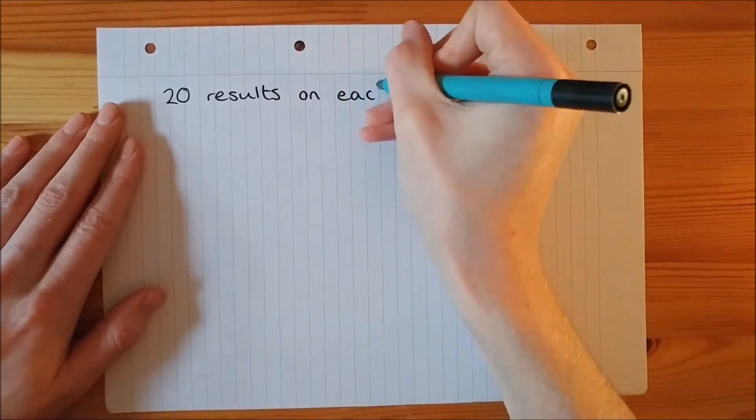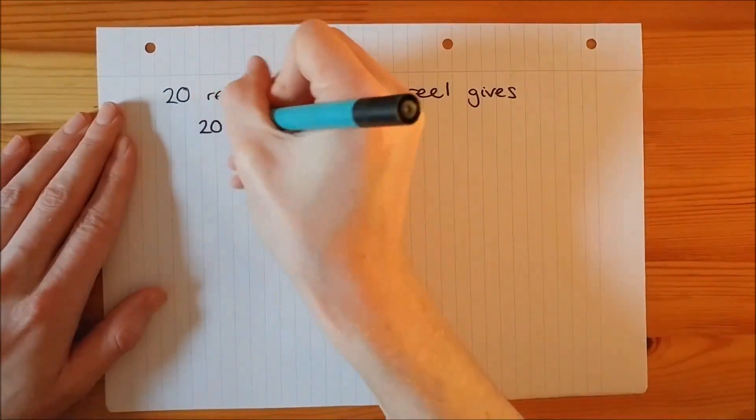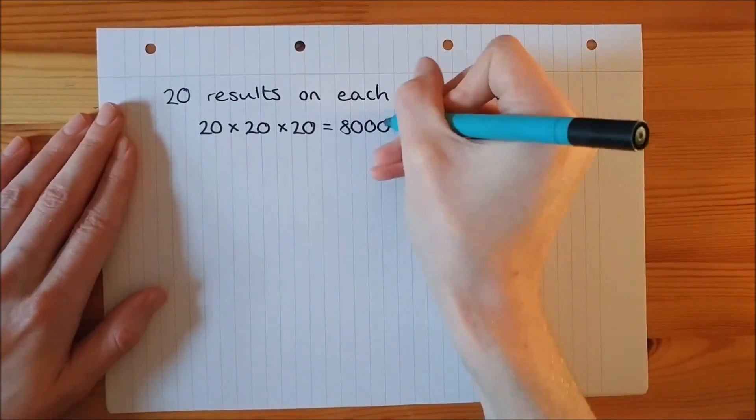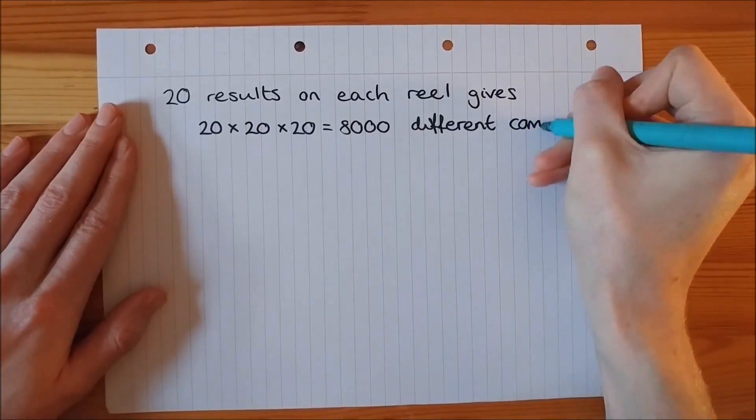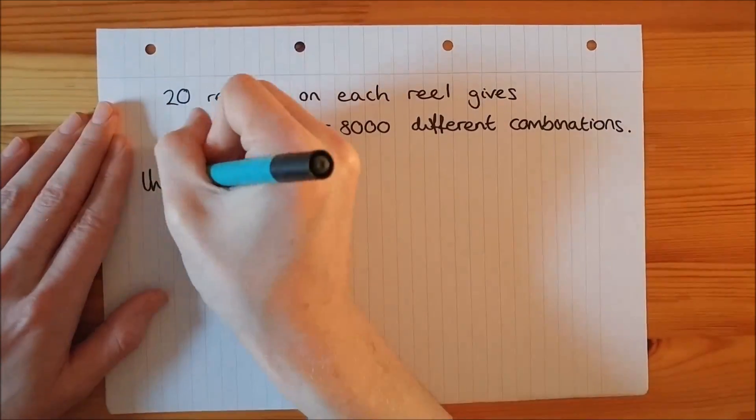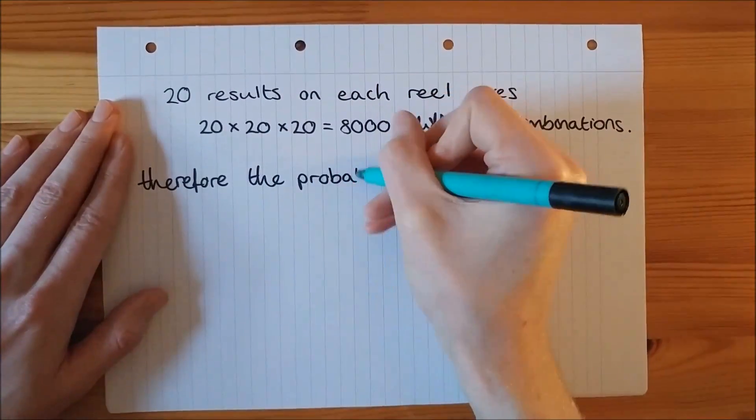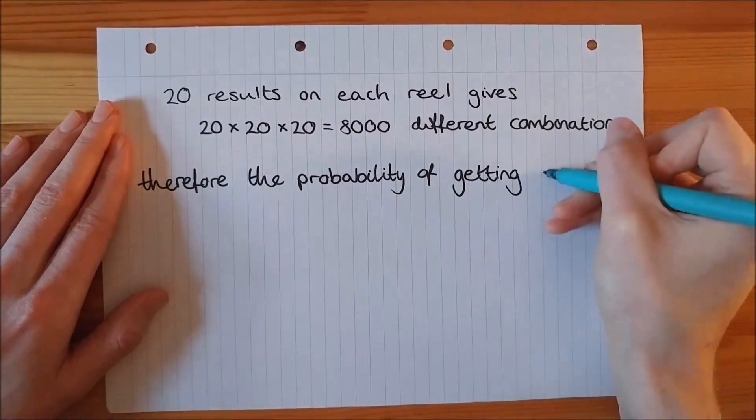20 results on each reel gives 20 times 20 times 20, which is equal to 8,000 different combinations. Therefore, the probability of getting a line is equal to 1,073 over 8,000, which is approximately 13.41%.